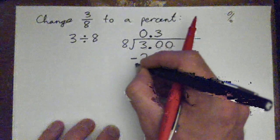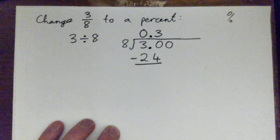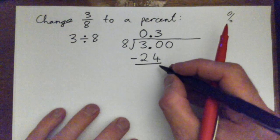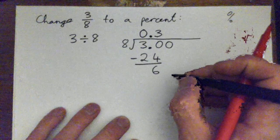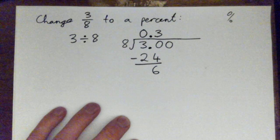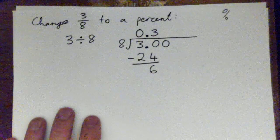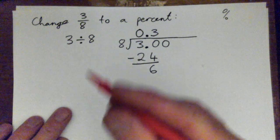And then we subtract. And we go, thirty minus twenty-four. Six, good. So we got thirty minus twenty-four is six.